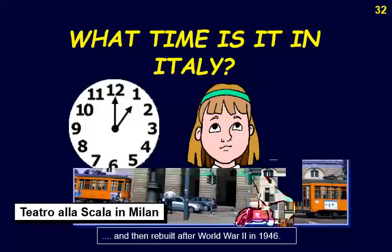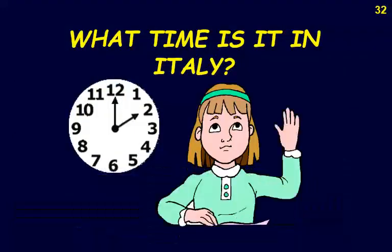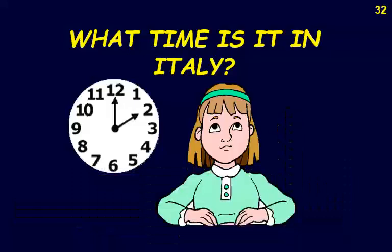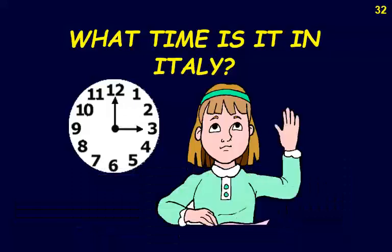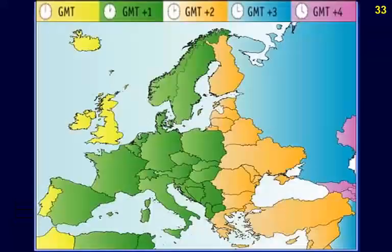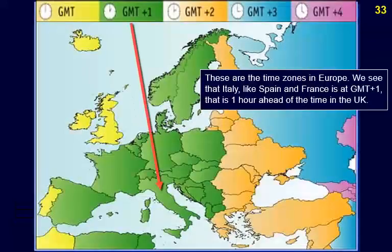What time is it in Italy? Italy, like Spain and France, is at GMT+1, that is one hour ahead of the time in the UK.